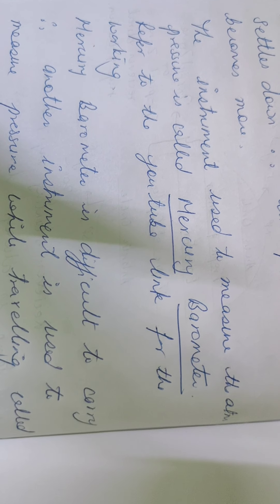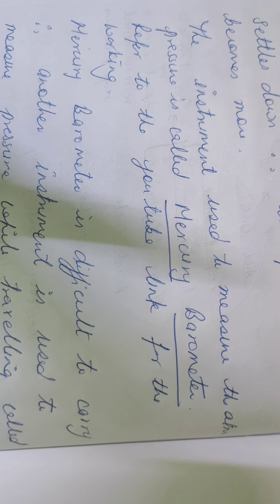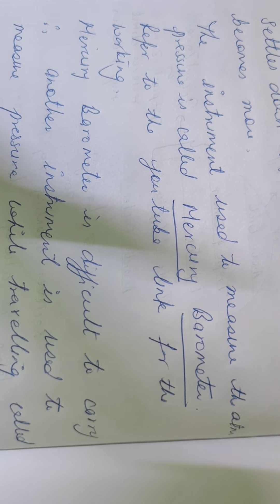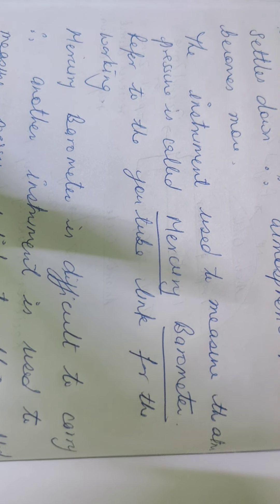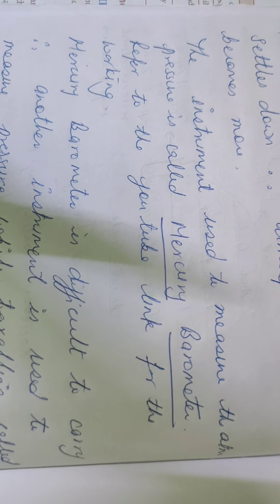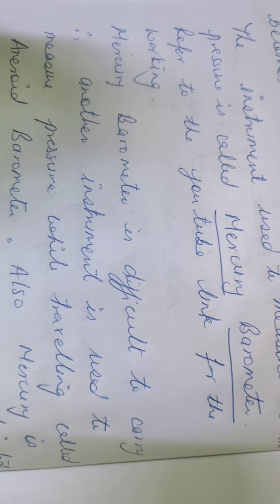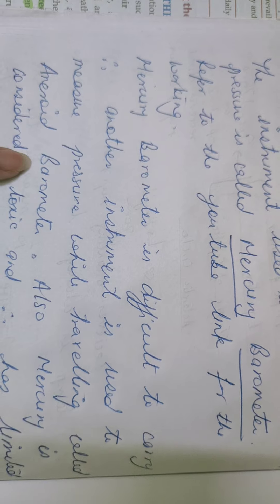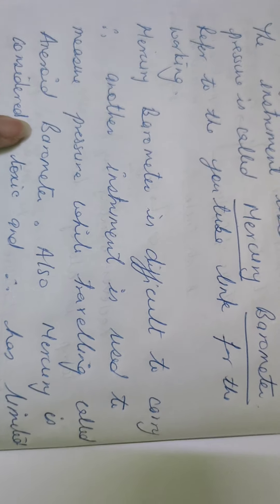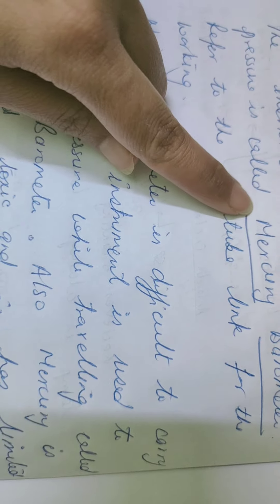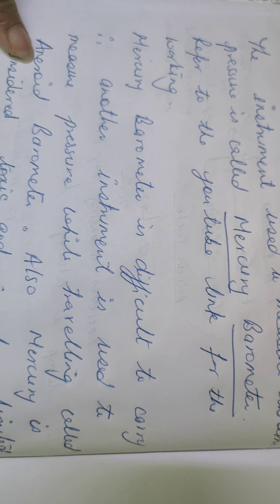The mercury barometer was very difficult to carry from one place to another because it was an open instrument containing mercury. It was not very convenient, and mercury is also very toxic — its use was actually banned in European countries. Therefore, they had to look for another alternative, which came in the shape of the aneroid barometer. So we have two barometers: the mercury barometer, which is old, and the aneroid barometer, which is the modern method.